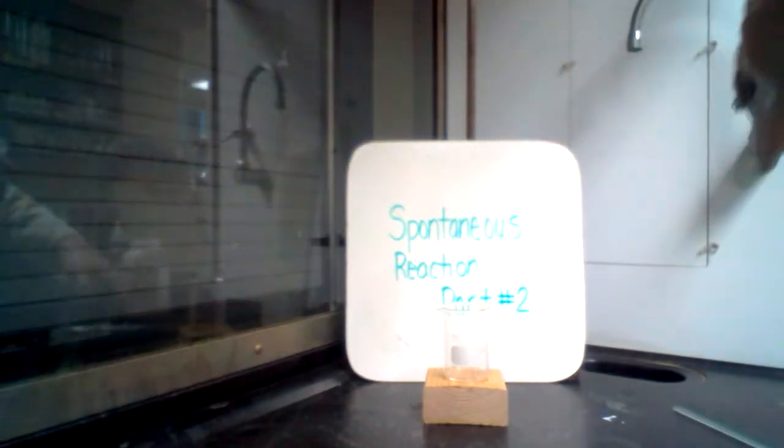So barium hydroxide is first. I'll take a spatula and spoon in approximately 30 grams. That's about 30 grams.